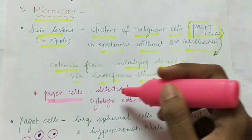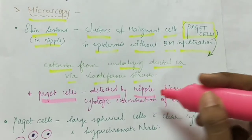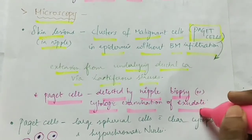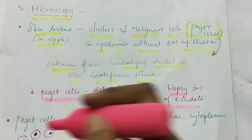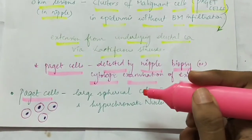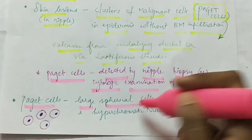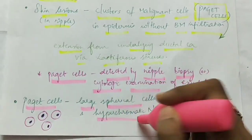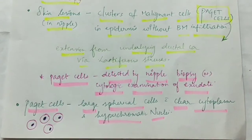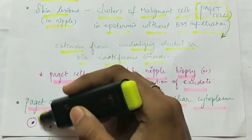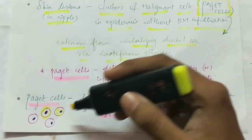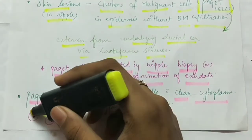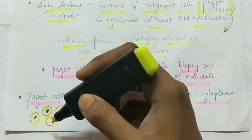The Paget's cells are detected by nipple biopsy or cytologic examination of the exudate. The Paget's cells are large spherical cells with clear cytoplasm and hyperchromatic nuclei. These are the Paget's cells.